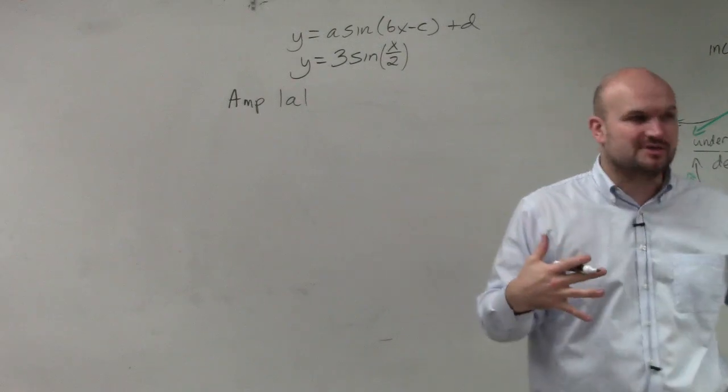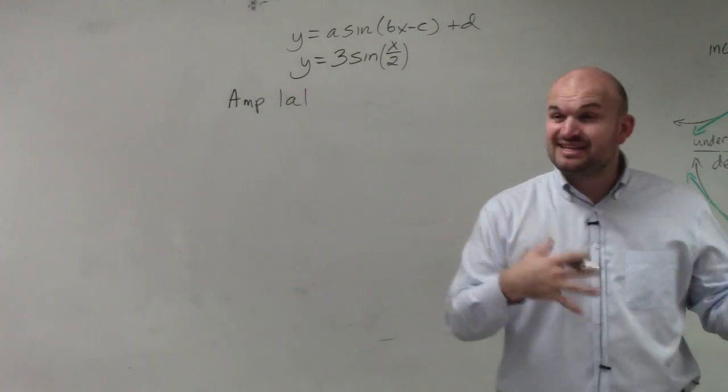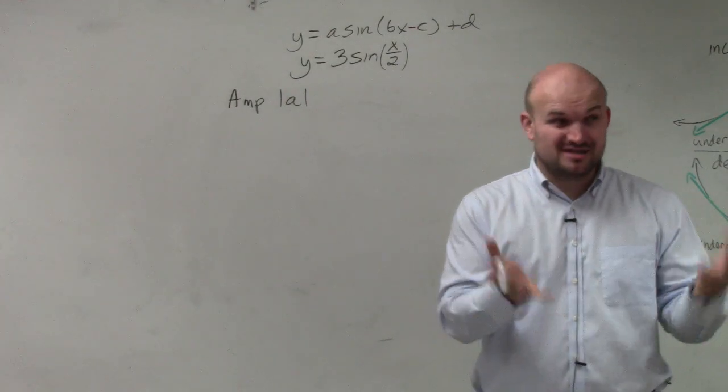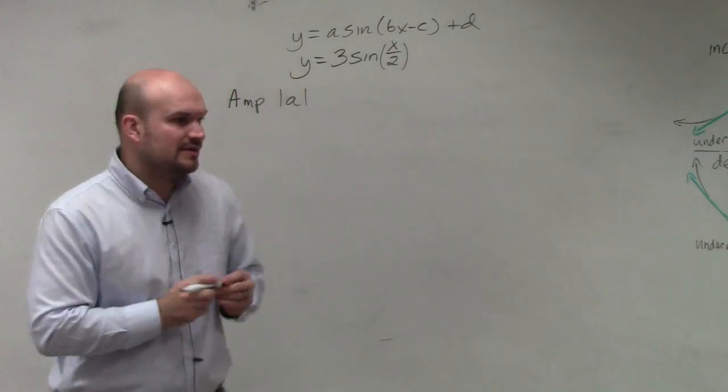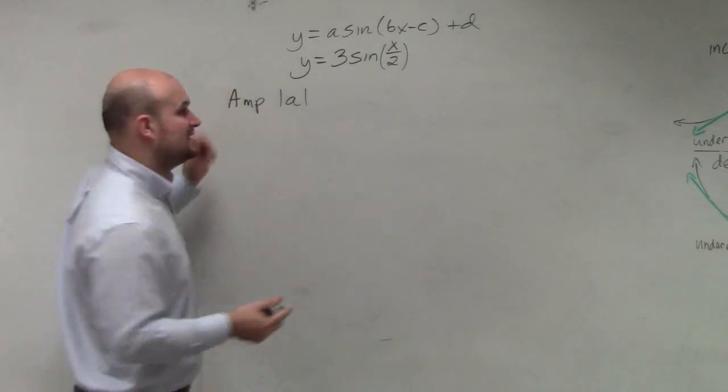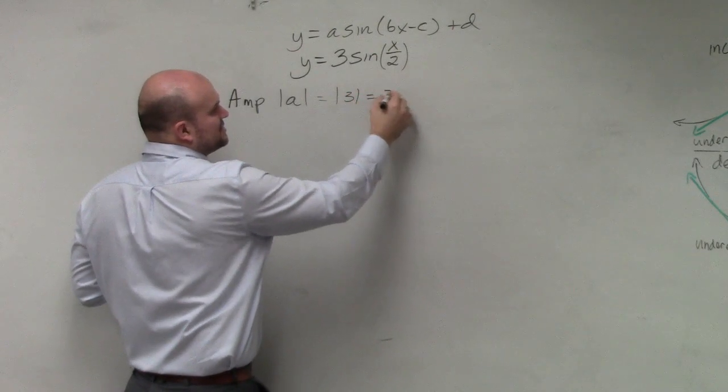If you remember two class periods ago, we talked about how they all relate. If you weren't here, you really need to make sure you have those notes because we only talked about it for one day and then we moved along. However, to identify the amplitude, you're just taking the absolute value of A, which in this case is 3. So the absolute value of 3 is just 3.